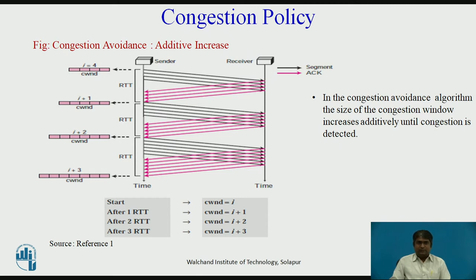If we start with the slow start algorithm, the size of the congestion window increases exponentially. To avoid congestion before it happens, one must slow down this exponential growth. When the size of the congestion window reaches the slow start threshold, the slow start phase stops and the additive increase phase begins. In this algorithm, each time a whole window of segments is acknowledged, the size of the congestion window is increased by 1. The increase is based on RTT, not on the number of arrived ACKs.